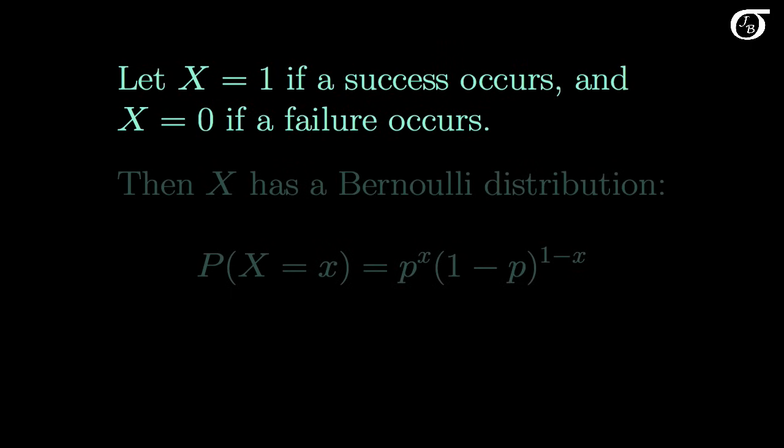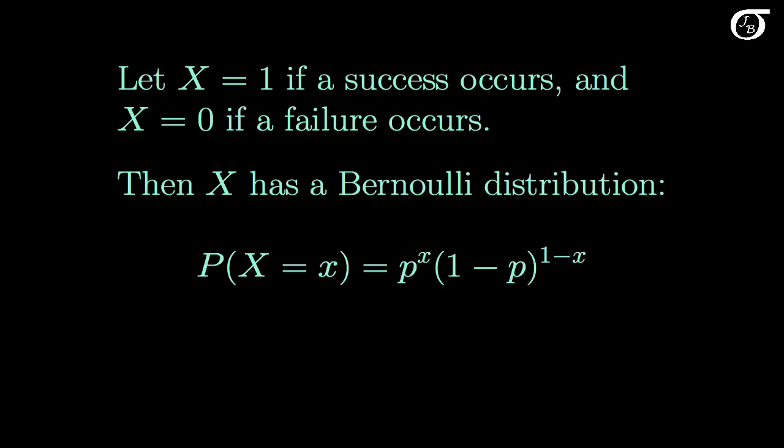We're going to let the random variable x equal 1 if a success occurs, and 0 if a failure occurs. And if these conditions hold, then x has what we call the Bernoulli distribution, where the probability the random variable x takes on the value little x is equal to p to the x, 1-p to the 1-x.